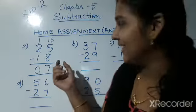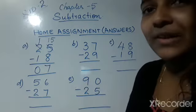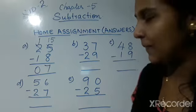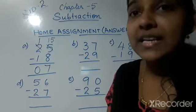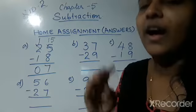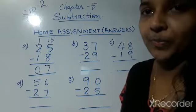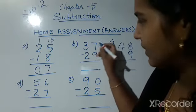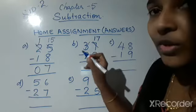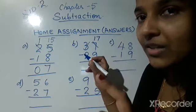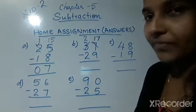Now the next question: 37 minus 29. To answer this, start with the ones place — 7 and 9. 7 minus 9 is not possible because 7 is smaller than 9. So here also you need regrouping. Borrow 1 from 3, then it becomes 17 and 3 becomes 2. So write 2 here.